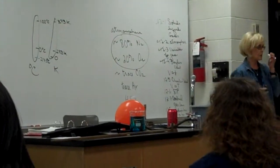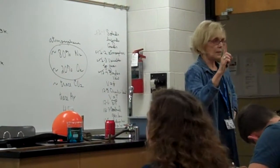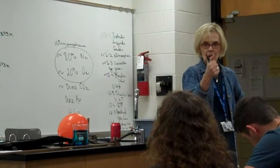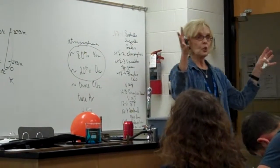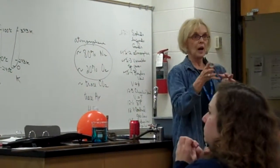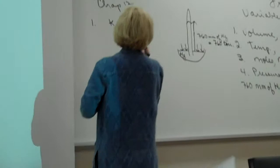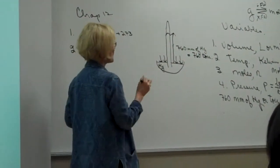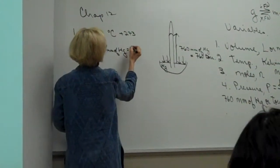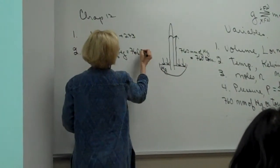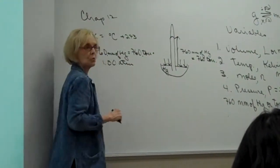So those are our variables that we need to be comfortable with. Now let's get into the first laws. We're going to study the laws individually — Boyle's Law, Charles's Law, Avogadro's Law — and then we're going to throw it all together into the combined gas law. It would also be good to put on our list: 760 millimeters of mercury equals 760 Torr equals 1 atmosphere.